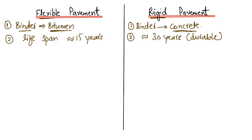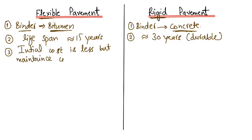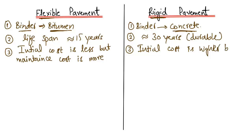The third difference is cost. For flexible pavement, the initial cost is less but the maintenance cost is higher. In the case of rigid pavement, it is the opposite: the initial cost is higher because concrete is more expensive, but the maintenance cost is lower. This lower maintenance cost is considered an advantage of rigid pavement.